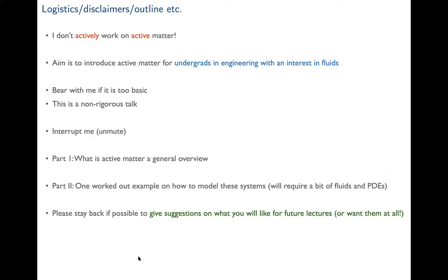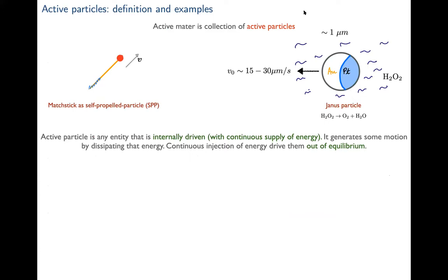Please stay back after the lecture for suggestions on future topics. Now let's get started. The word 'active matter' has two components: 'active' and 'matter.' Matter is essentially a collection of particles. So active matter is a collection of active particles — but that requires defining what an active particle is.